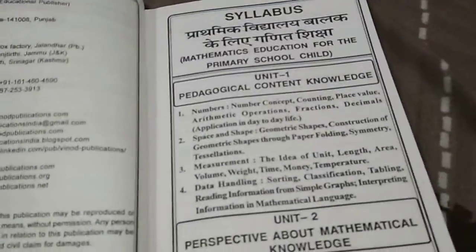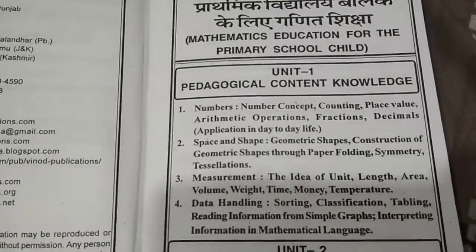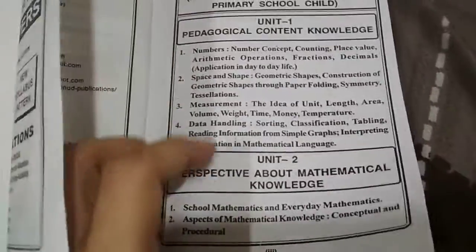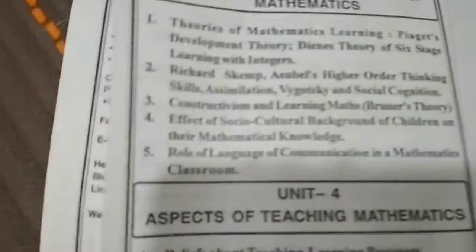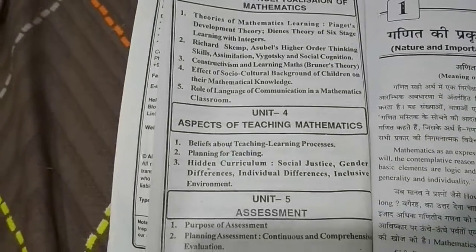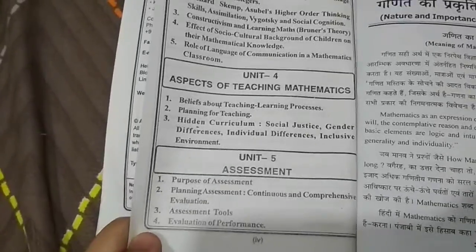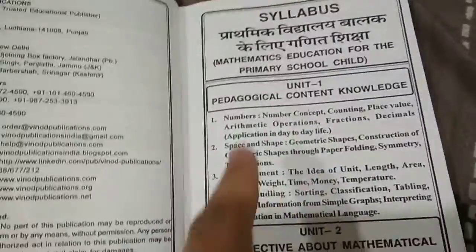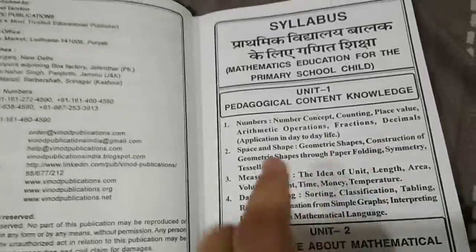Let's check — first of all, the syllabus is mentioned. You can check that the syllabus is mentioned: Unit 1 — Pedagogical Content Knowledge; Unit 2 — Perspective of Mathematical Knowledge; Unit 3 — Children's Conceptualization of Mathematics; Unit 4 — Aspects of Learning Mathematics; Unit 5 — Assessment. You can check whether the topics in the syllabus are covered in the book's content or not.